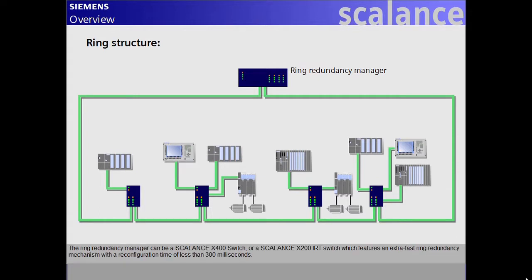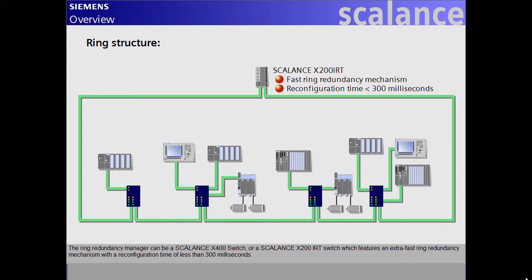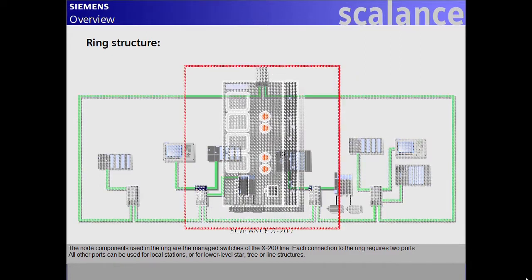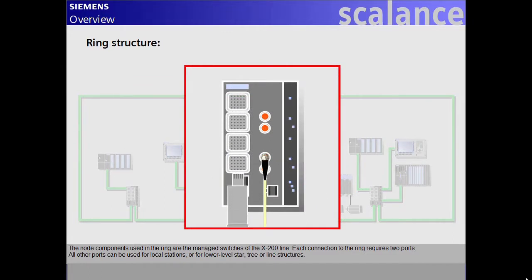The ring redundancy manager can be a Scalance X400 switch or a Scalance X200 IRT switch, which features an extra-fast ring redundancy mechanism with a reconfiguration time of less than 300 milliseconds. The node components used in the ring are the managed switches of the X200 line. Each connection to the ring requires two ports. All other ports can be used for local stations or for lower-level star, tree or line structures.